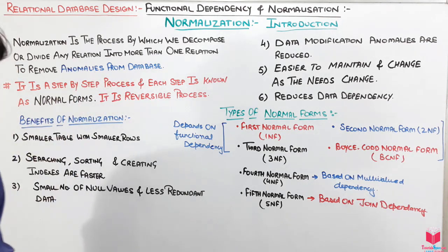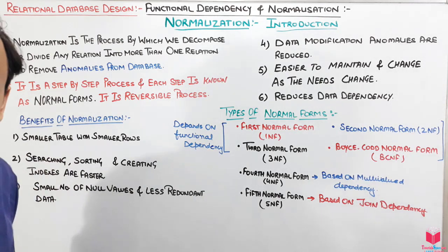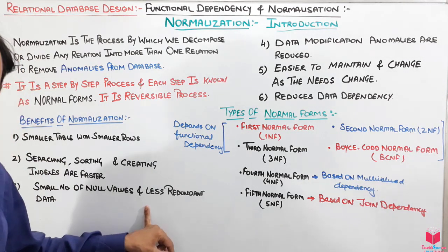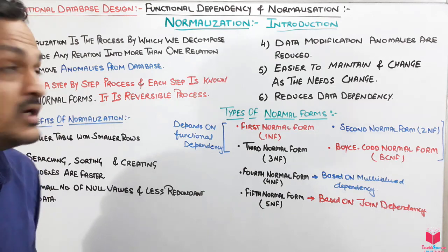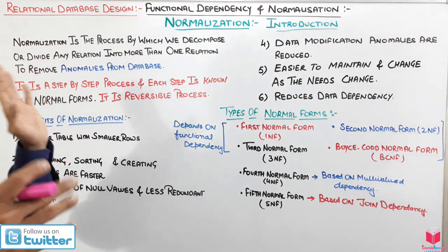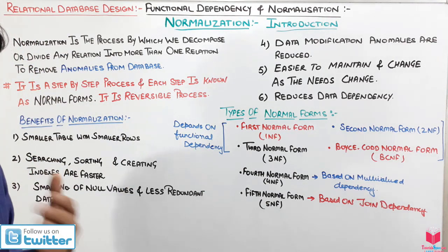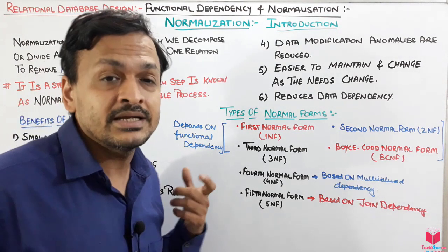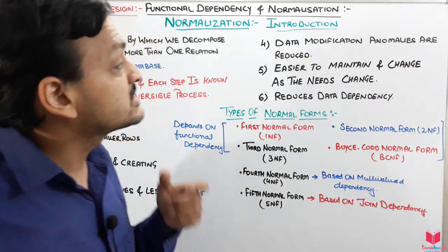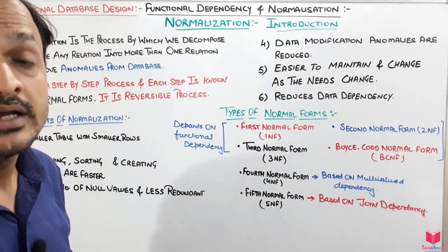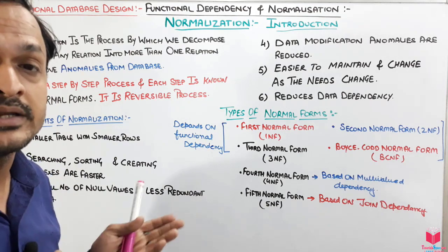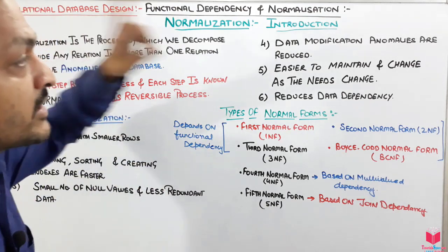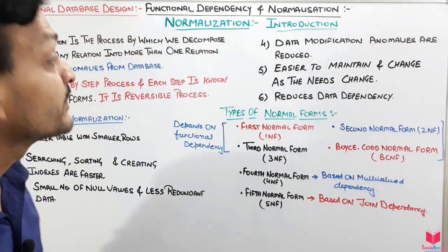Another benefit is a smaller number of null values and less redundant data. If we remove all the anomalies, there will be fewer null values and less redundant data. Additionally, data modification anomalies — that is, updation anomalies — are reduced through normalization.